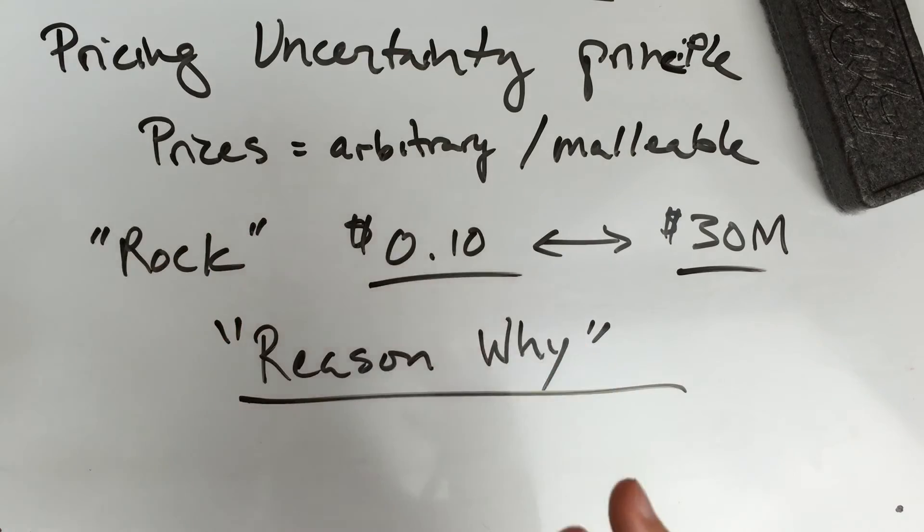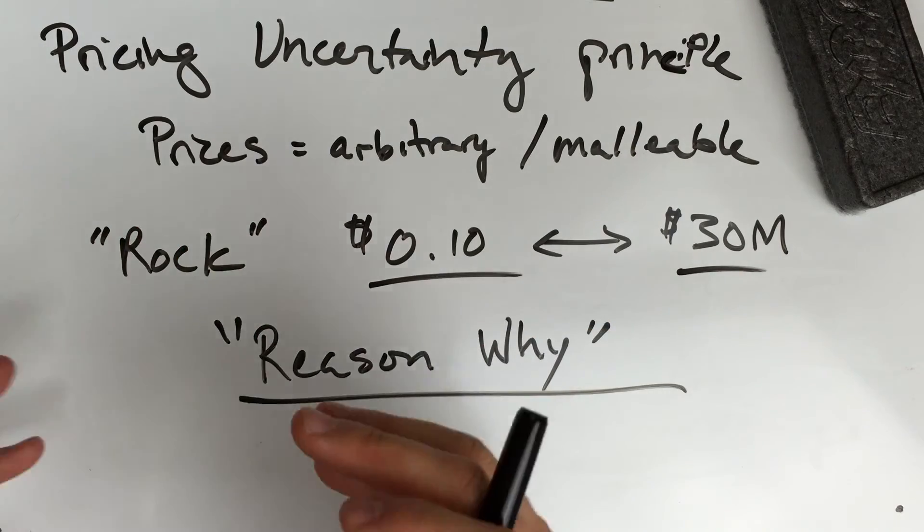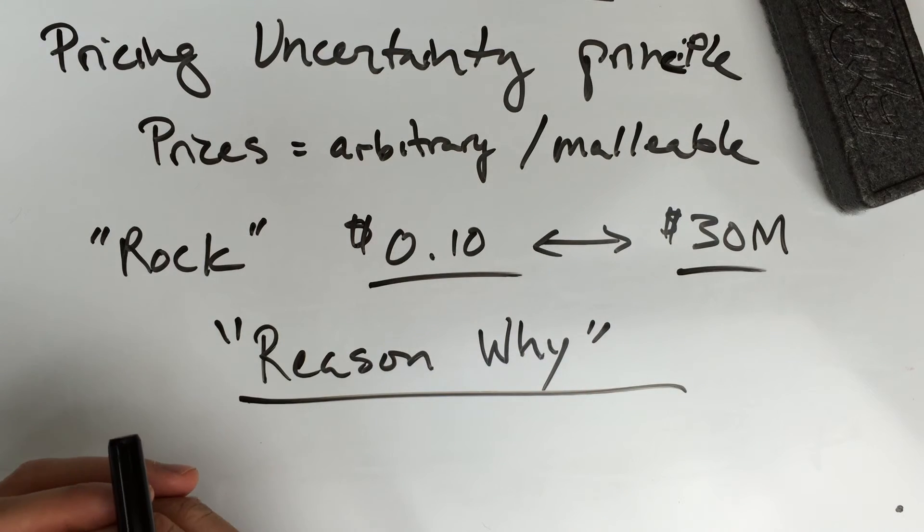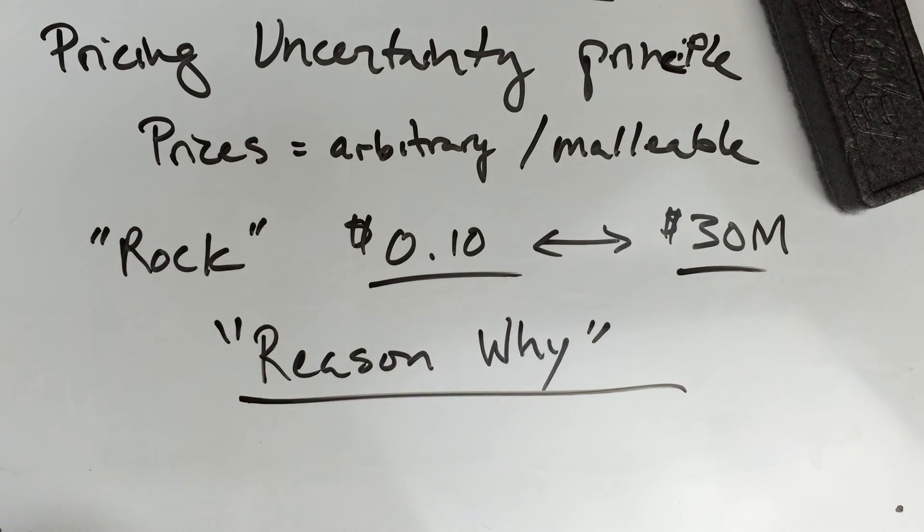But the general act of setting a price is completely arbitrary. You may do so in any fashion you see fit. You can set any price you want—that's the pricing uncertainty principle.